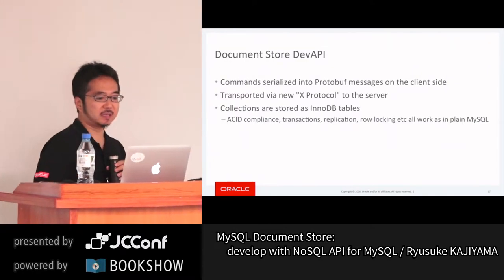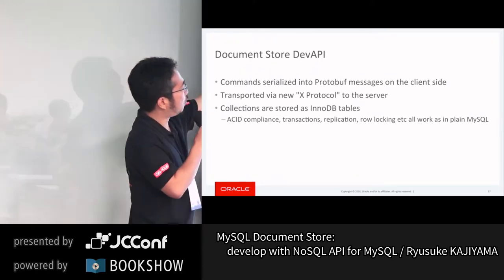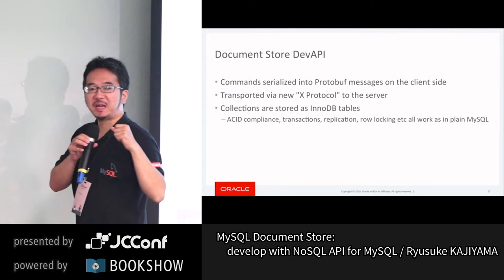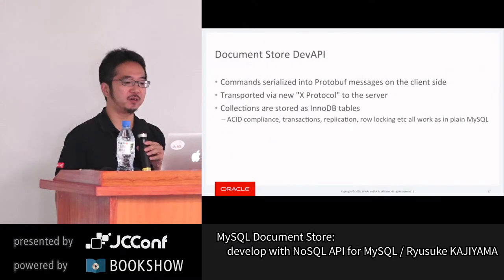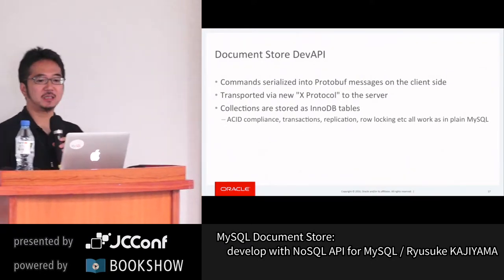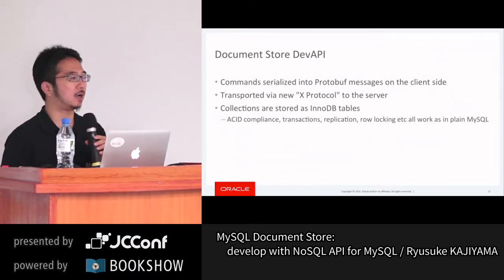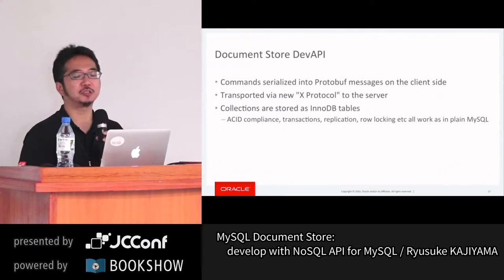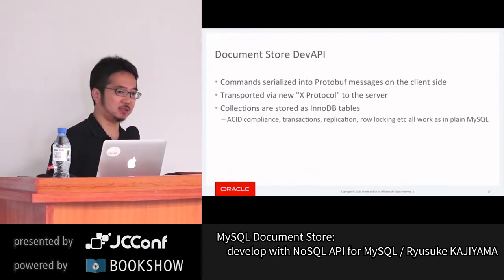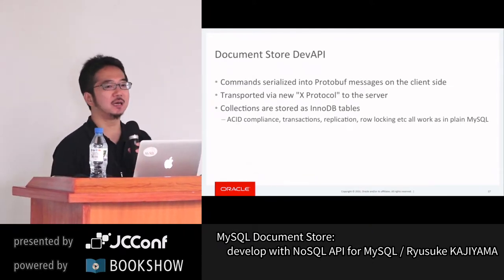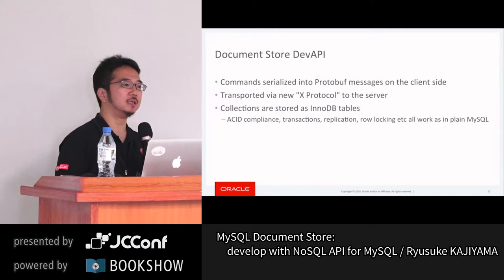All commands are serialized by Protocol Buffer. Communication is over X Protocol, which uses a different port number compared to the existing MySQL legacy protocol. The traditional port number is 3306, but the X Plugin opens another TCP/IP port. By default it uses 10 times the MySQL legacy protocol port — so 33060 is the number.